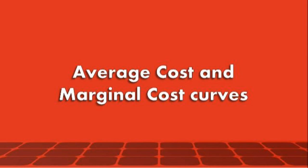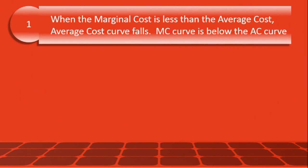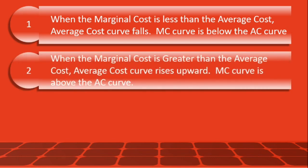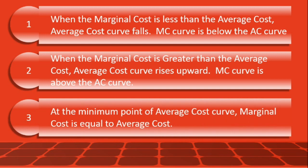The three relations are: first, when marginal cost is less than the average cost, the average cost curve falls, and the marginal cost curve is below the average cost curve. Second, when marginal cost is greater than the average cost, the average cost curve rises upward, and the marginal cost curve is above the average cost curve. Third, at the minimum point of the average cost curve, marginal cost is equal to average cost.